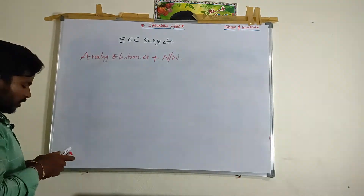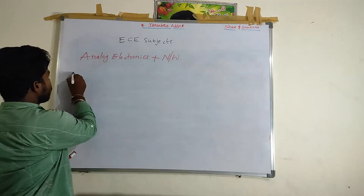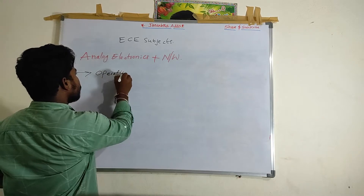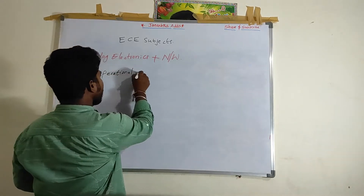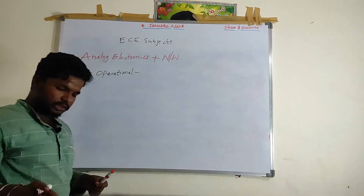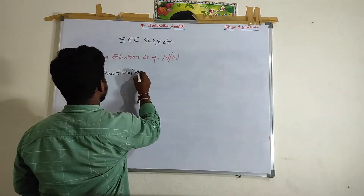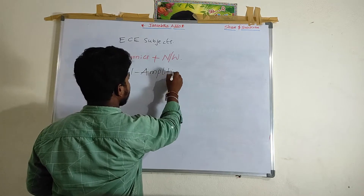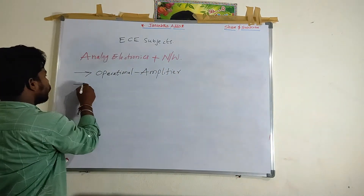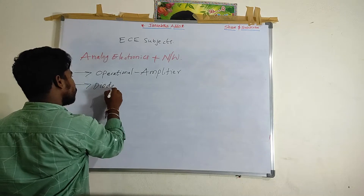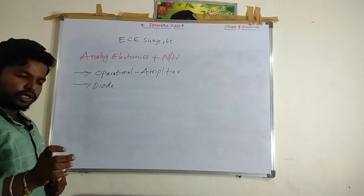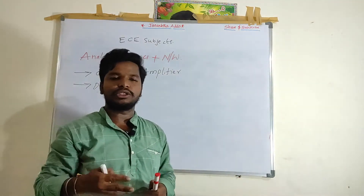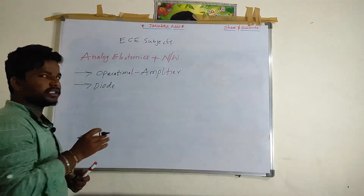Within Analog Electronics, I will initially start with Operational Amplifiers. I will give you a broad introduction to Analog Devices. Within Analog Devices, we will first discuss Operational Amplifiers and then go to Diode applications. We will also discuss the Diode in detail — its working, fabrication process, and related conditions. We will also discuss these in the context of EDC.